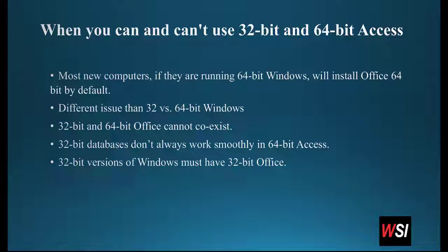This is not the same thing as 32-bit versus 64-bit Windows. If you have 32-bit Windows, you're going to have 32-bit Office. If you have 64-bit Windows, you can still install 32-bit Office. However, you cannot install both 32-bit and 64-bit Office on the same system. You can install either the 64-bit version or the 32-bit version, but not both. If you really need them both, then you have to look into things like virtual machines — but that's beyond the scope of this video.